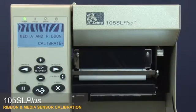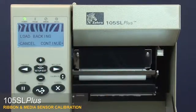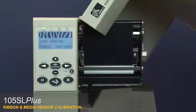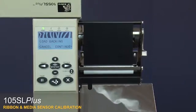Press the plus button to calibrate the ribbon. The control panel shows load backing. Open the media door. Open the printhead.